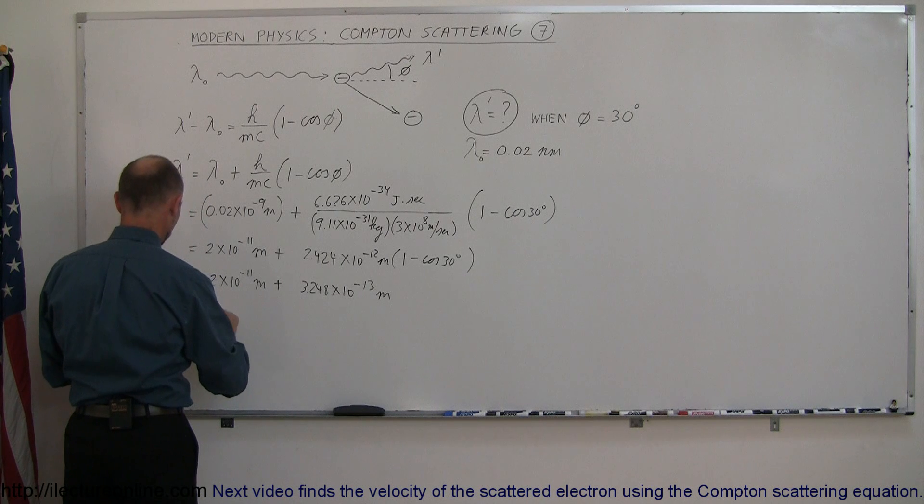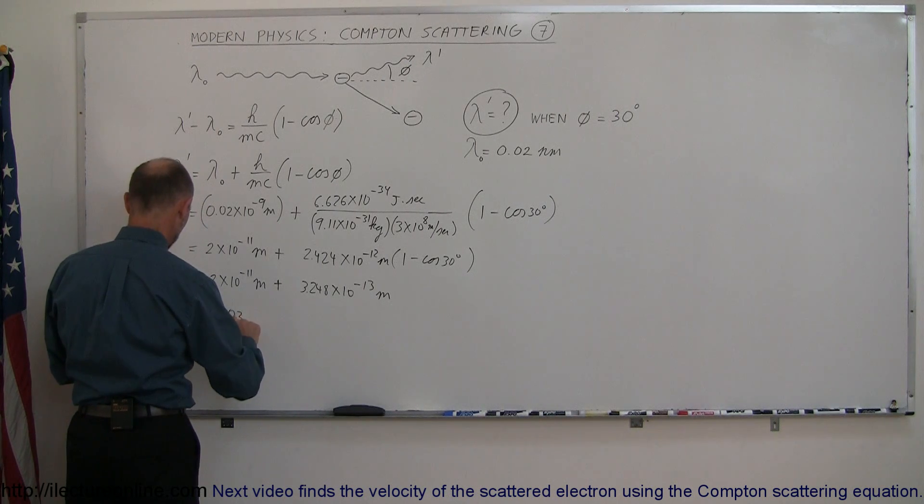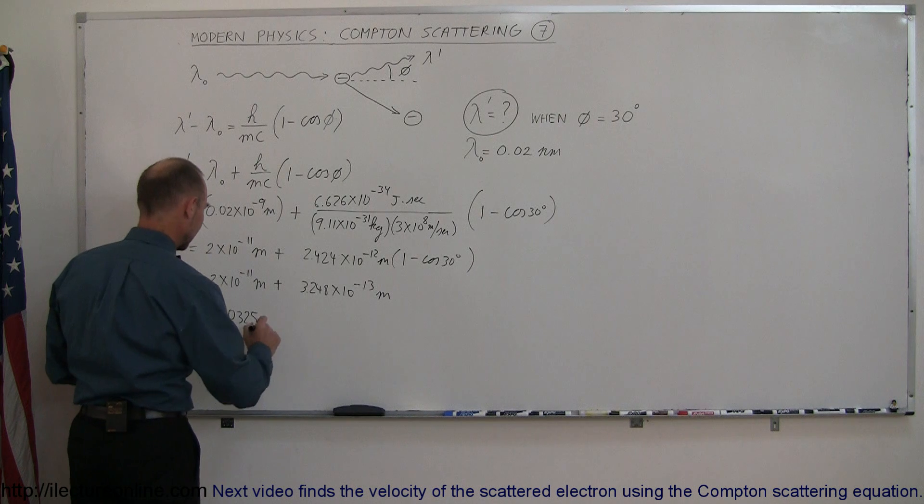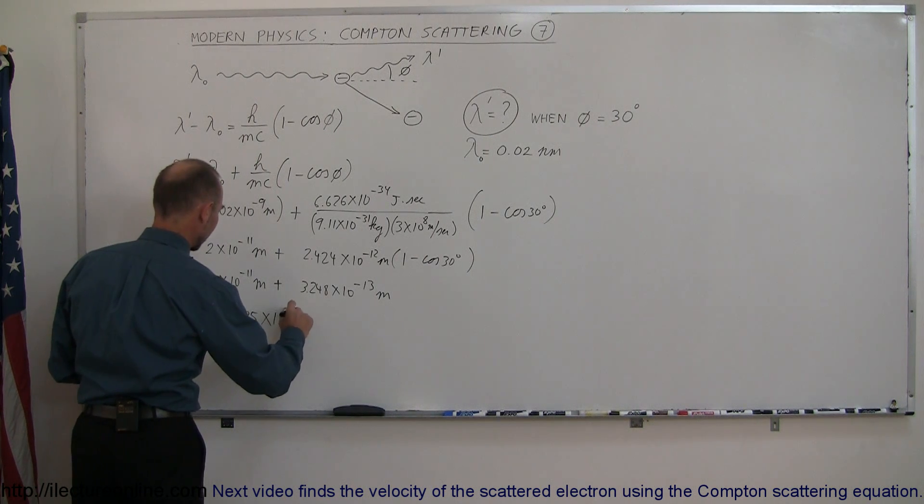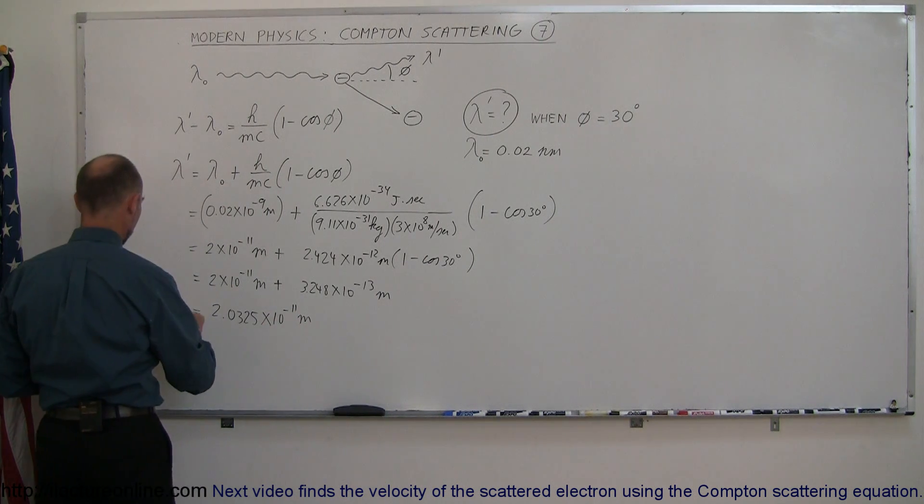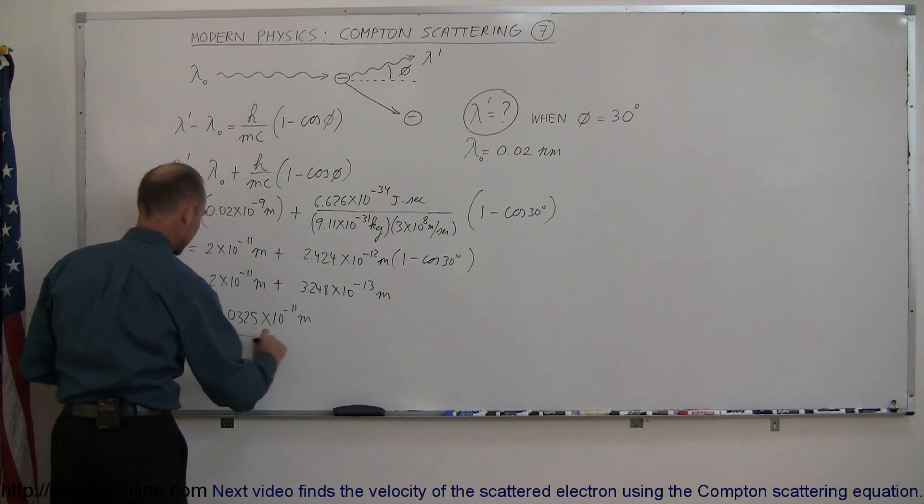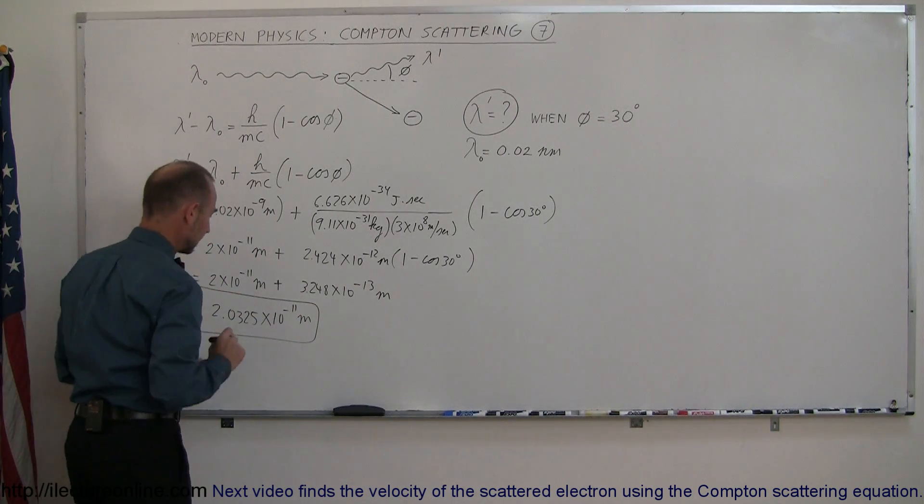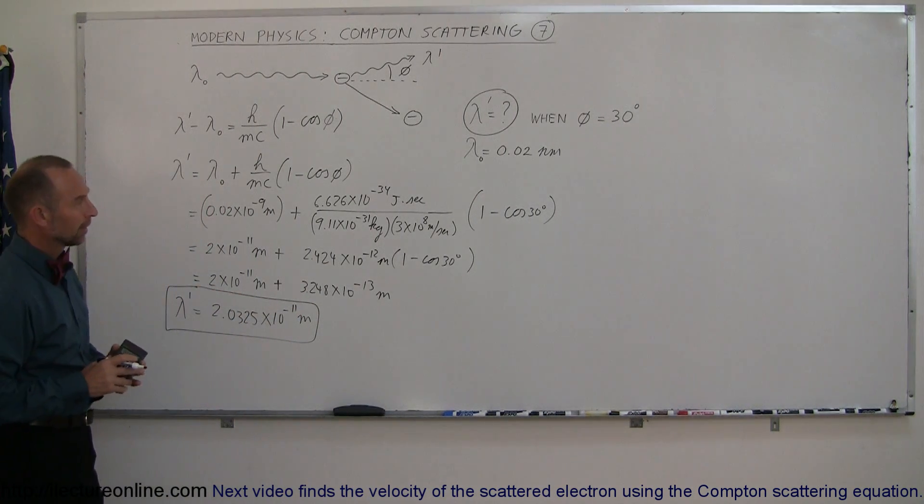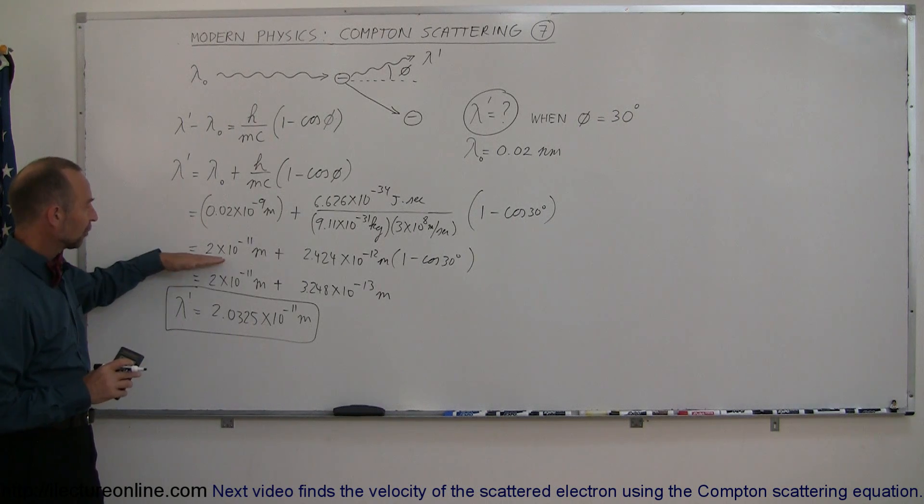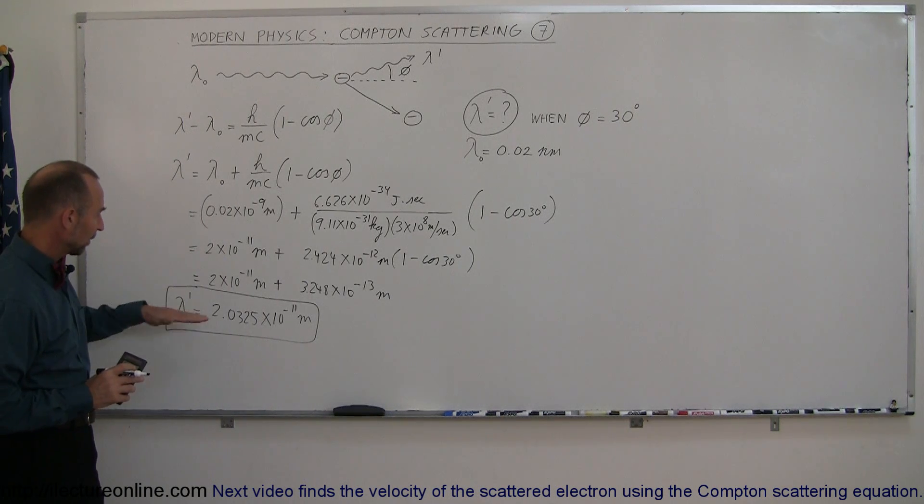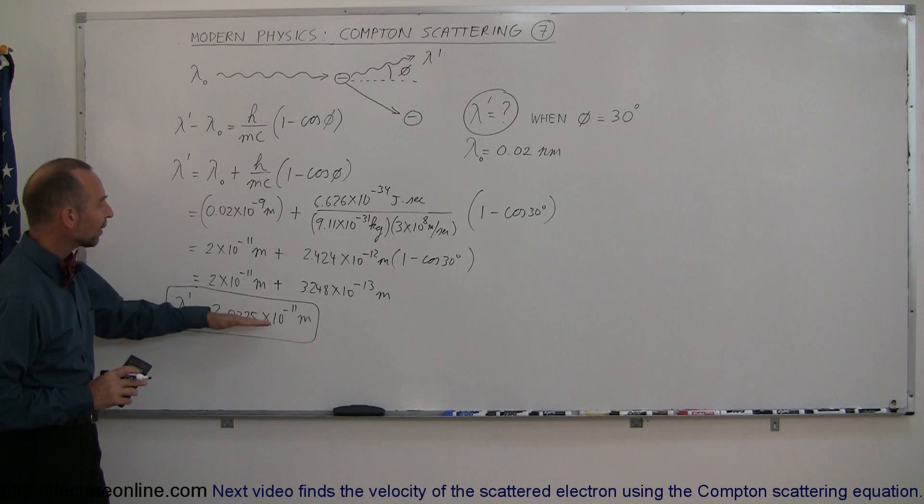This becomes 2.0325 times 10 to the minus 11 meters—that's the new wavelength. We start out with a wavelength of 2 times 10 to the minus 11, and we end up with 2.0325 times 10 to the minus 11.